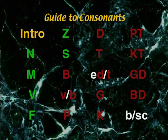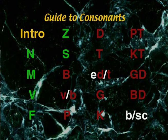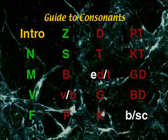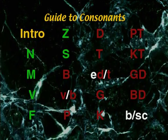Guide to Consonants has an introduction which provides an overview of all the consonants. Green are the legato, sustainable consonants — green for go. Red are the staccato, plosive consonants — red for stop.